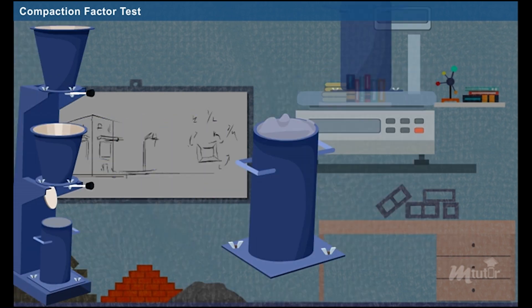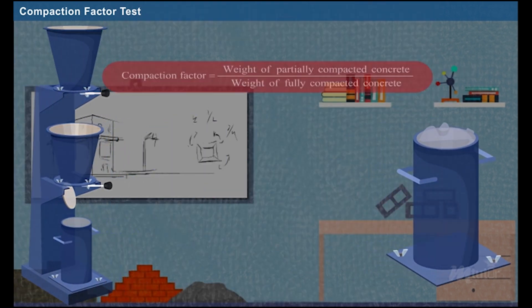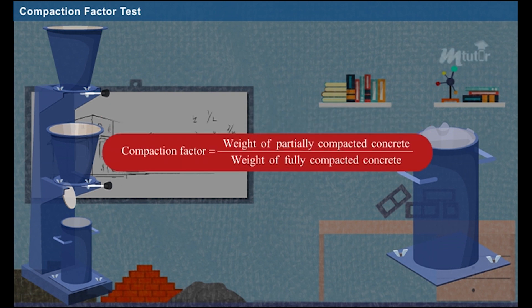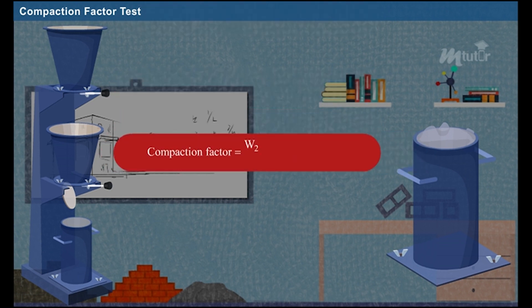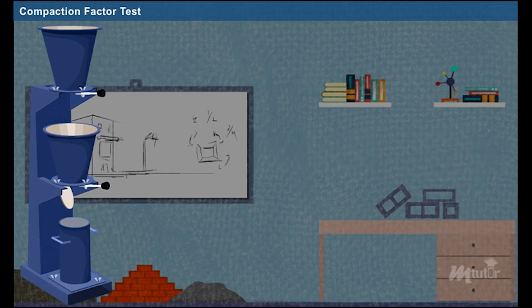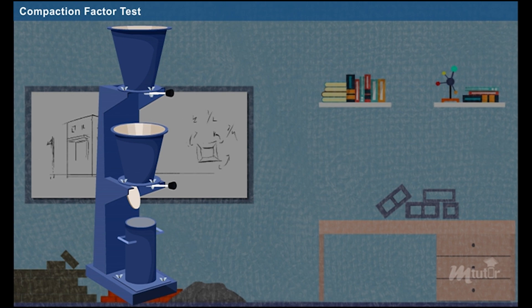Compaction factor is determined using a formula, which is the ratio of weight of partially compacted concrete to the weight of fully compacted concrete. That is, the ratio of W2 minus W1 to W3 minus W1. The value of compaction factor varies from 0.7 to 0.95 based on the workability of concrete. The major advantage of the compaction factor test is, it is used to calculate the workability of concrete with low water cement ratio.